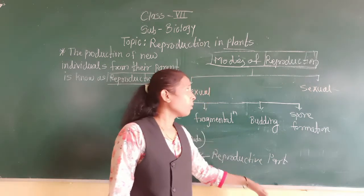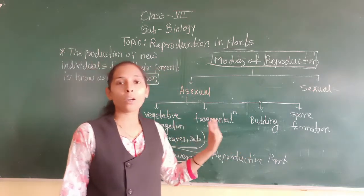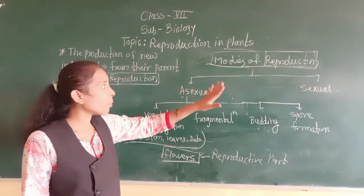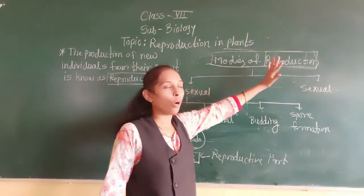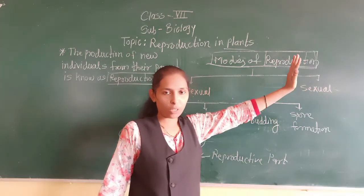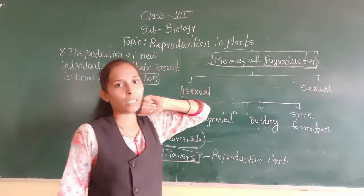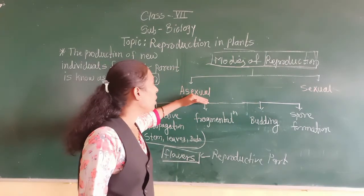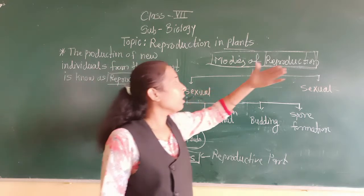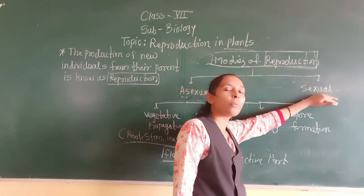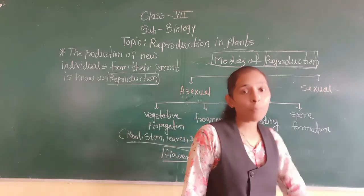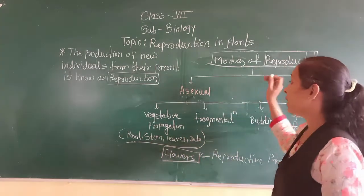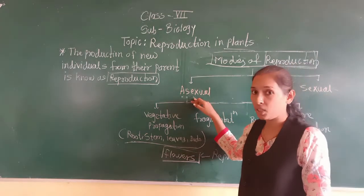According to that, basically the plants are divided into two categories on the modes of reproduction. On the modes of reproduction the plants are getting divided into two categories: some plants are there which get asexually reproduced whereas others get reproduced sexually. So now what is meant by asexual and sexual? Let's discuss the definition.